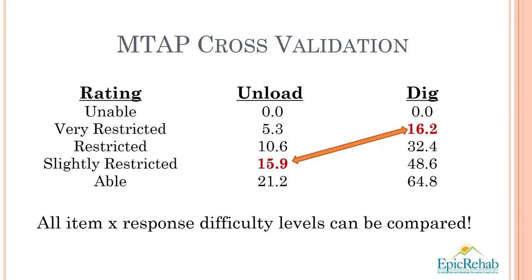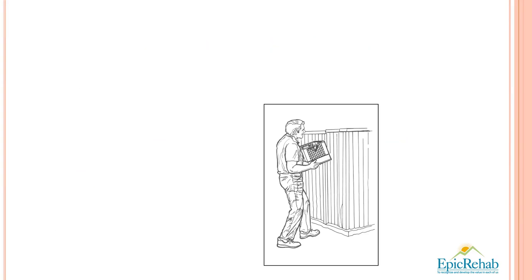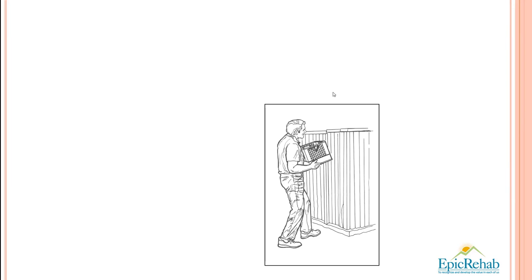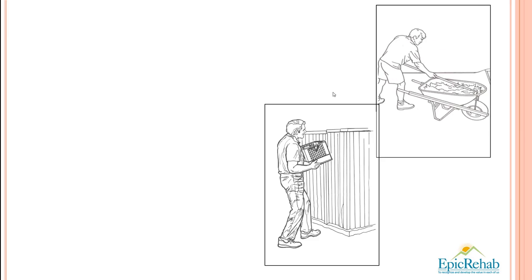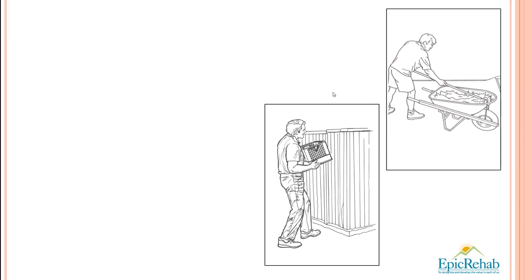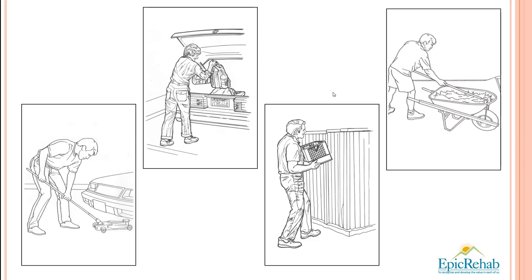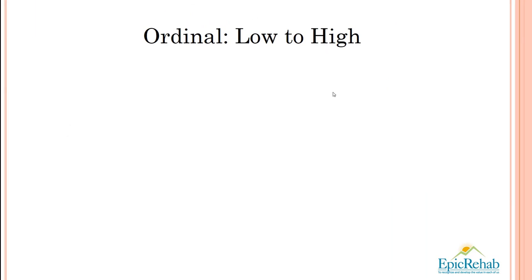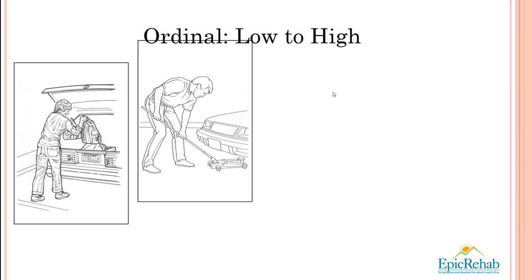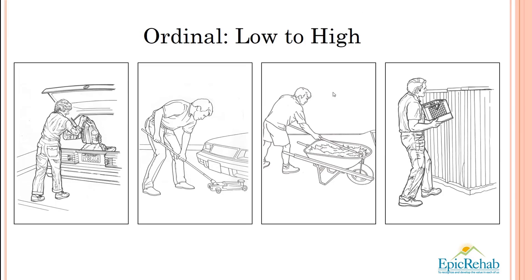Let's compare four different items: a person lifting a 100-pound crate from the ground to eye level, a person mixing cement in a wheelbarrow, a person using a floor jack to raise an automobile to change a tire, and unloading two 10-pound grocery bags from the trunk of an automobile. We can put these in order from low demand to high demand, ranging from unloading the grocery bags to lifting the 100-pound crate to eye level. And actually, we can do that with job analysis items as well.